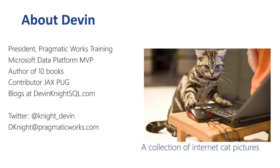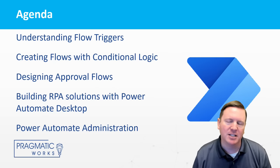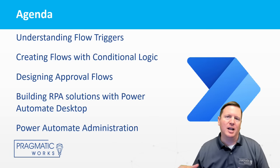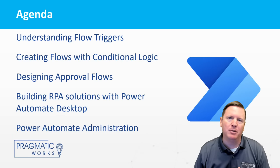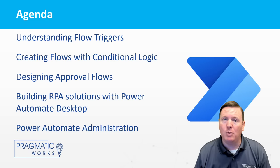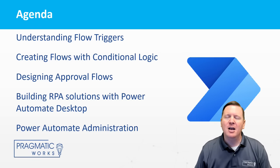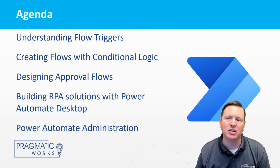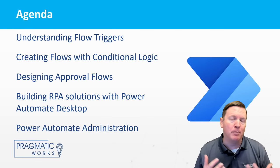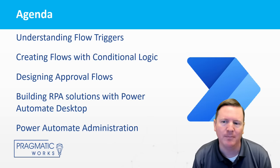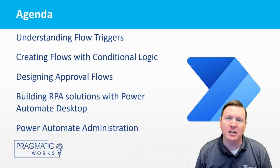Here's what our agenda looks like today — it's a pretty packed agenda. We're going to start by understanding the basics of flows, covering what Power Automate is, and the different types of triggers available. We'll talk about creating flows with conditional logic, and how you can make flows run under different filters and conditions. We'll also cover approval flows — the idea of having a human say yes or no to an action before it proceeds. Then we'll look at robotic process automation using Power Automate Desktop.